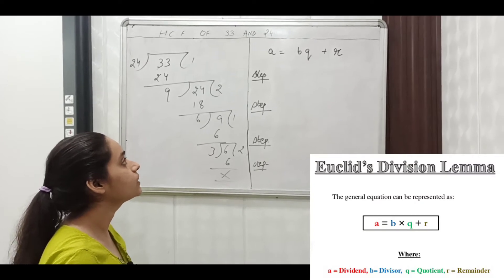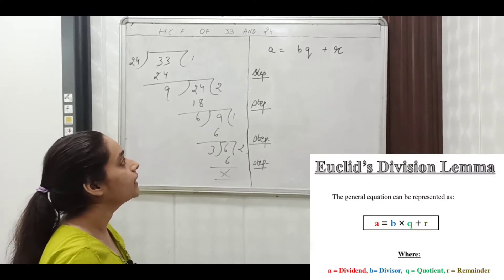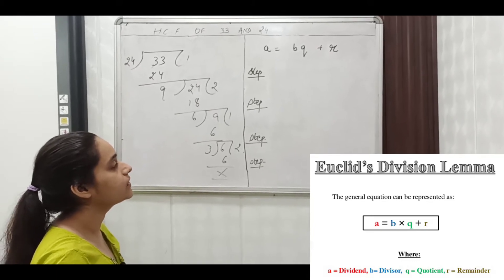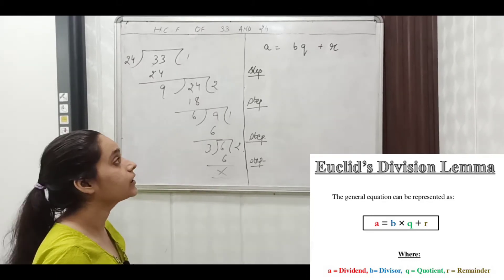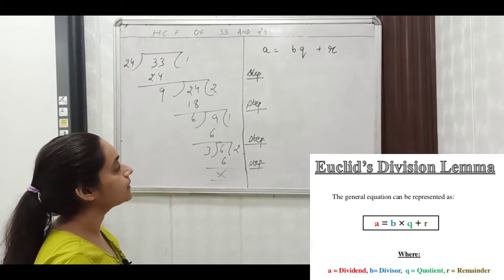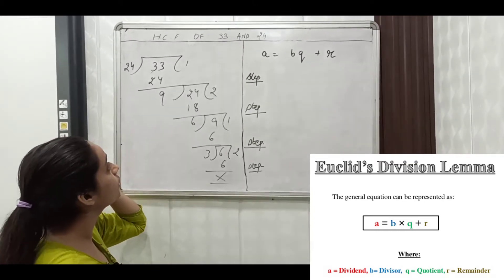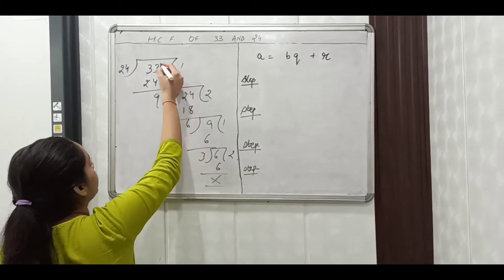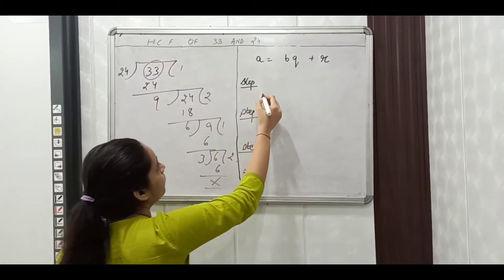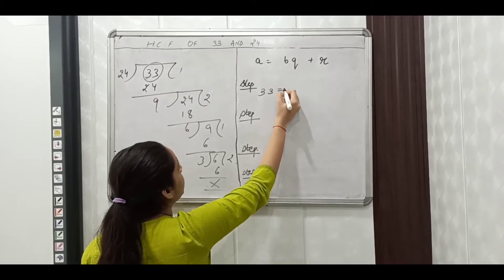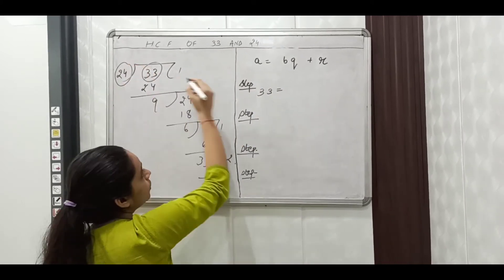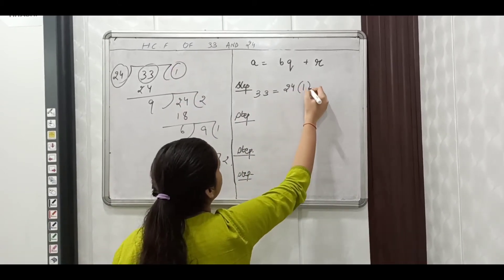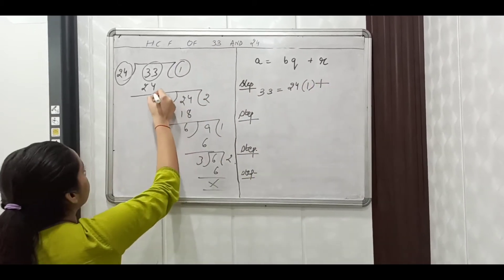The formula of Euclid's division lemma is A = BQ + R, where A is the dividend, B is the divisor, Q is the quotient, and R is the remainder. So let us apply this formula on natural numbers 33 and 24. In step 1, A is equal to 33, B is equal to 24, Q is equal to 1, and R is equal to 9.